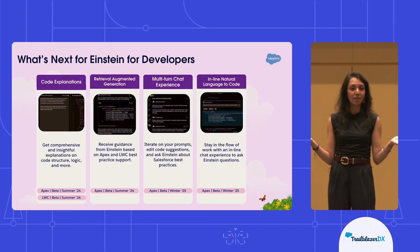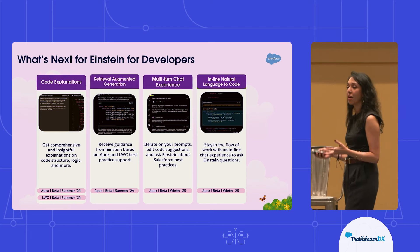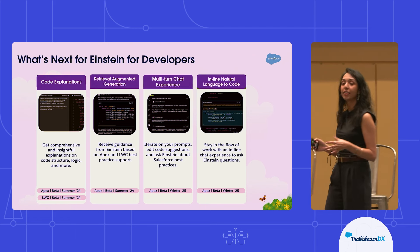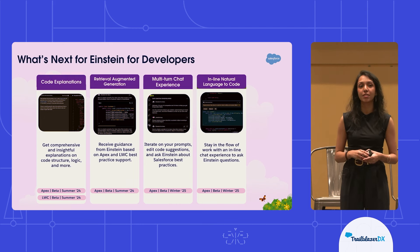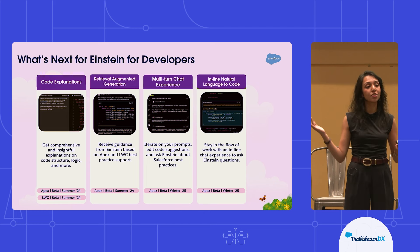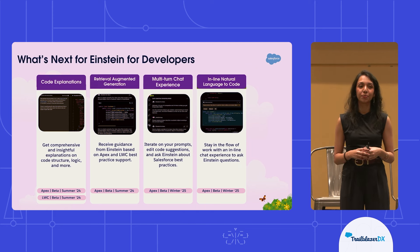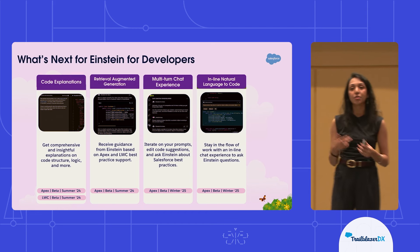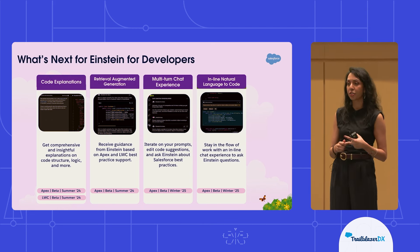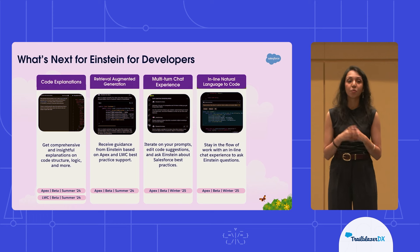So now the most exciting part — what's coming next for Einstein for Developers? We've been hard at work crafting this roadmap based off of the feedback that you all have provided throughout our pilot and open beta stages. One of the big next features we'll be looking at is code explanations. We've heard from many of you that oftentimes you're working inside of code bases where the original authors are no longer around, or maybe you're exploring a part of the code base you're not as familiar with. Our goal is to help make that process a bit easier — so that as you onboard onto new projects, you have code explanations that allow you to understand the logic behind the code, the structure, why certain implementation decisions are made, and how you can go about integrating that code into the rest of your project.